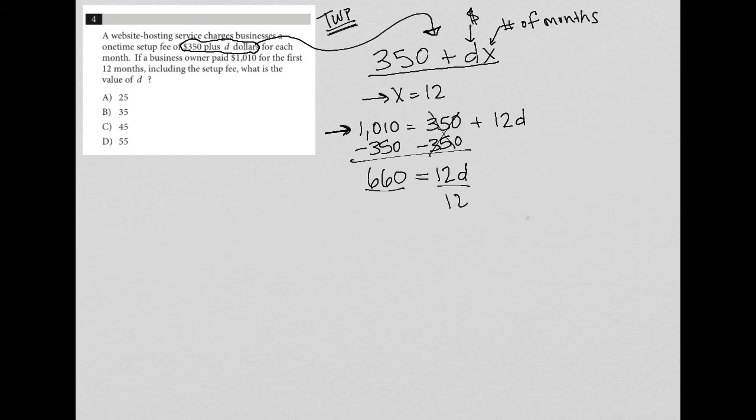I then divide both sides here by 12. And $660 in my calculator divided by 12 is $55. So $55 equals D. And therefore, the correct answer here is choice D.